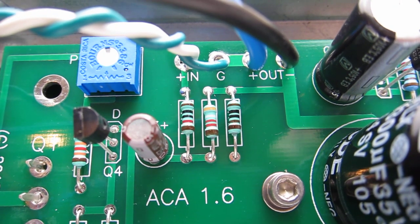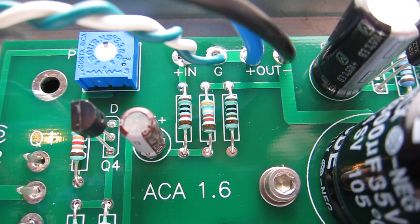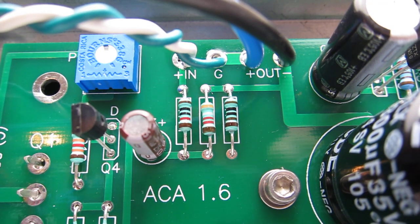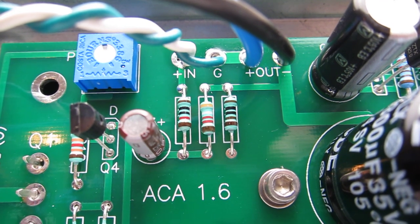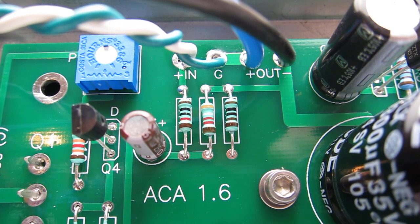You can see the input from the left RCA to the left. You can see the input from the RCA marked as the plus in and G. The plus is obviously the center of the RCA and the G is the ring of the RCA.